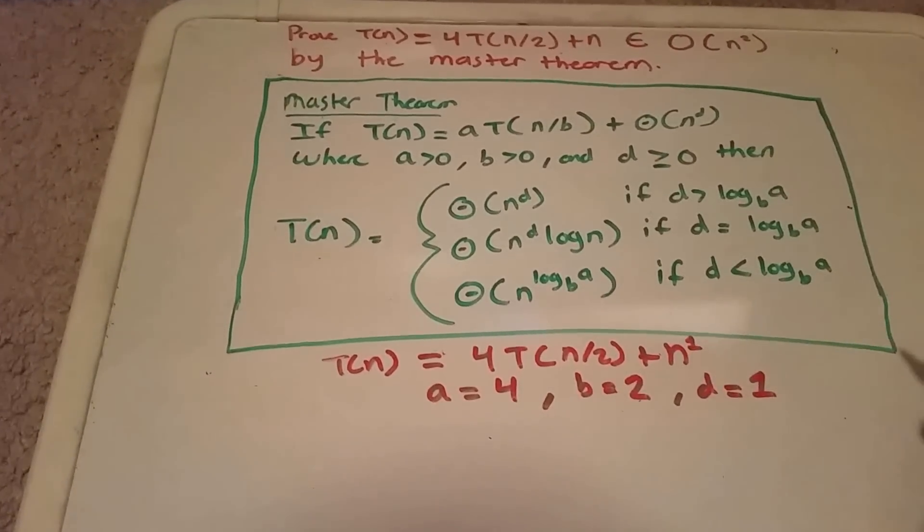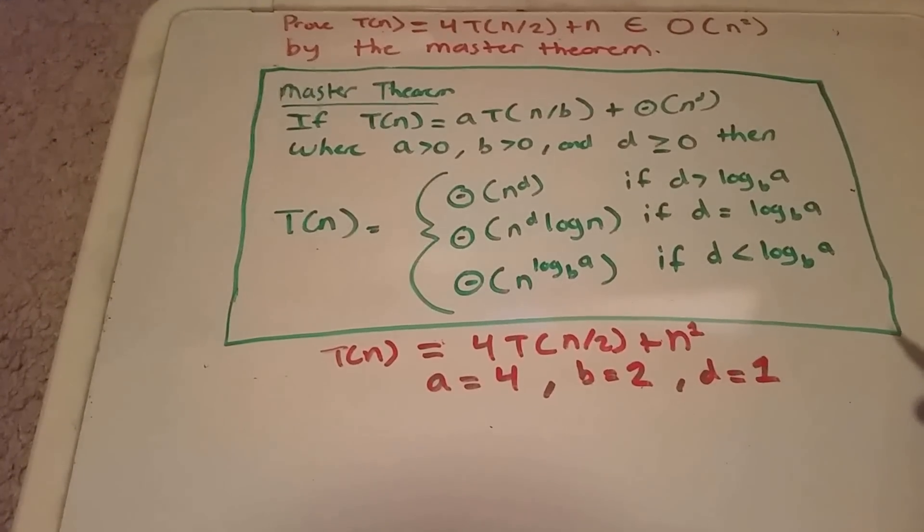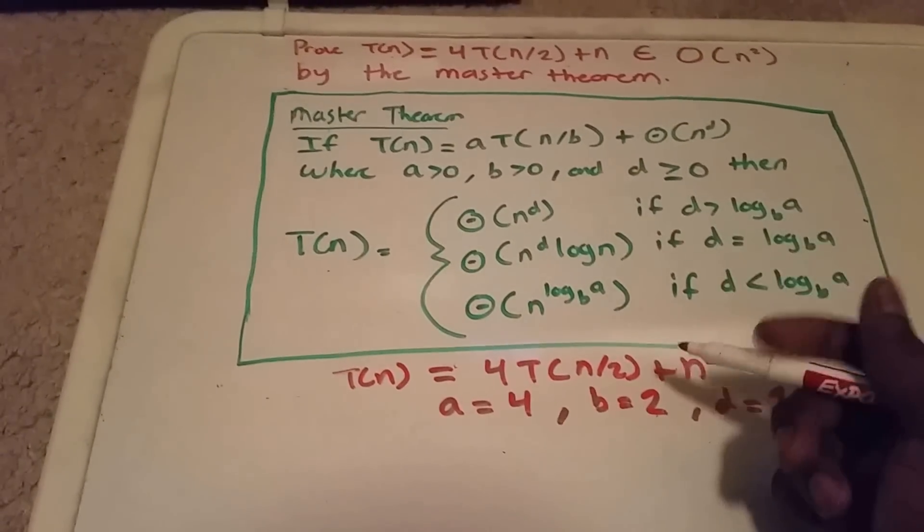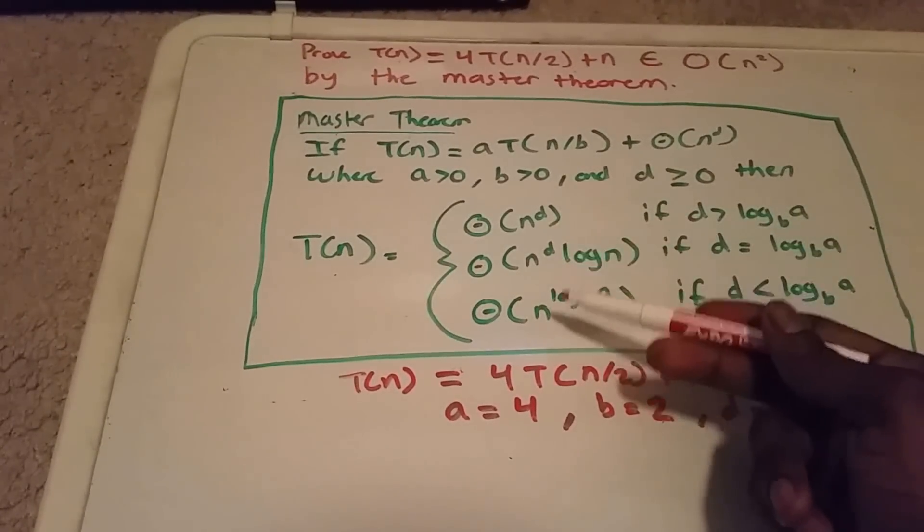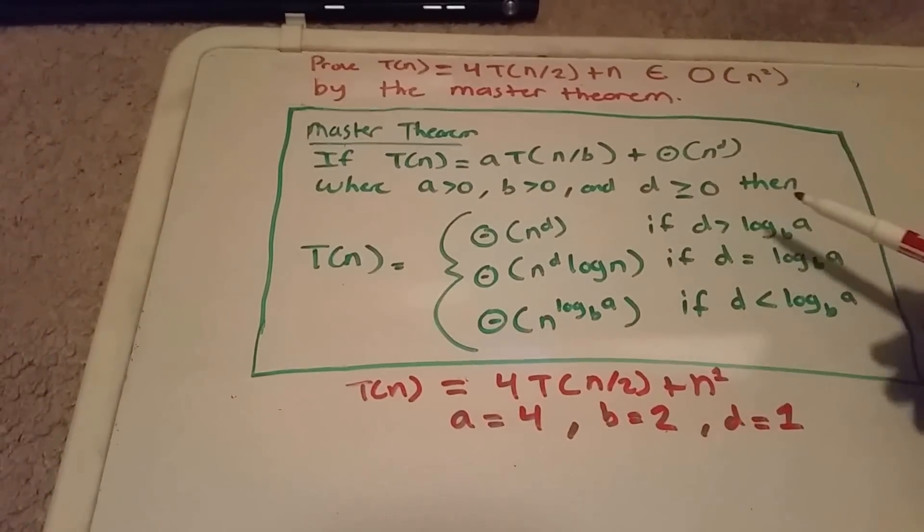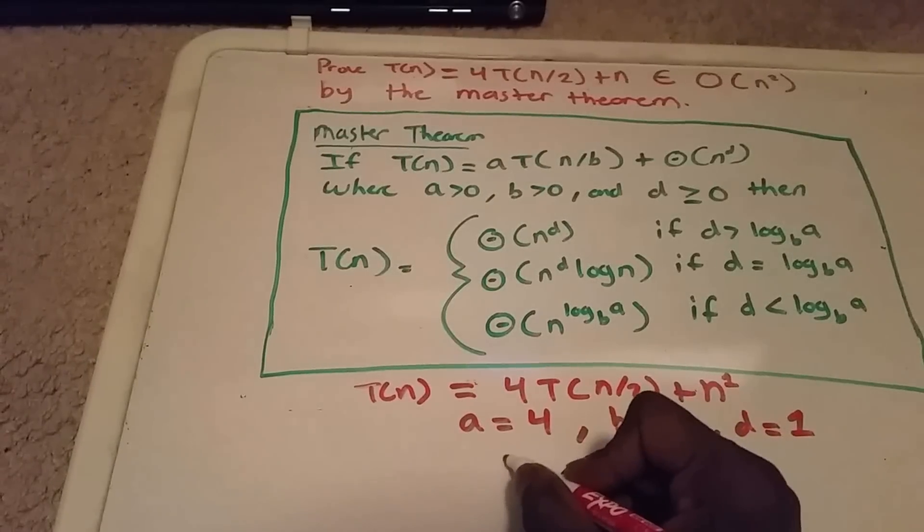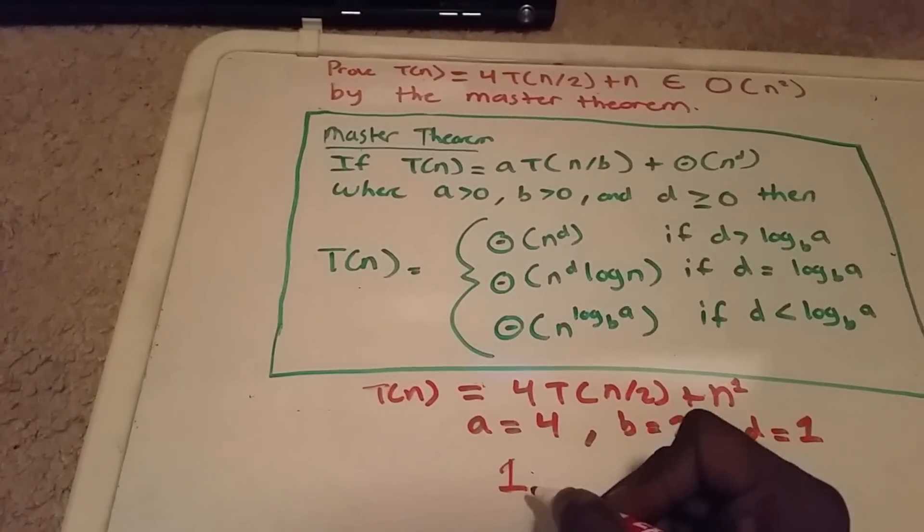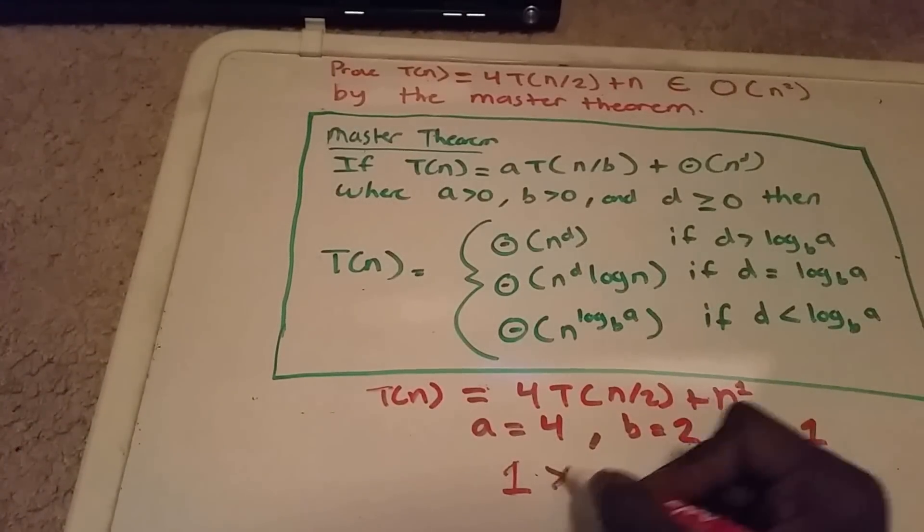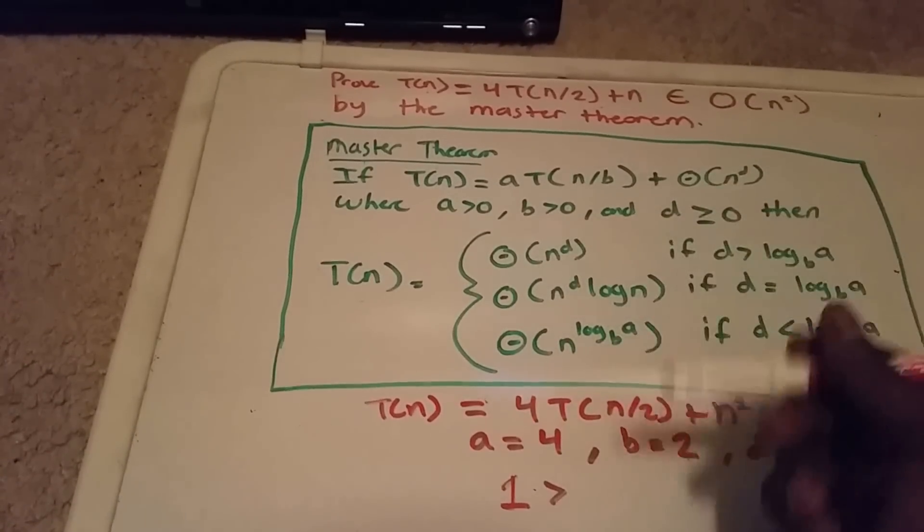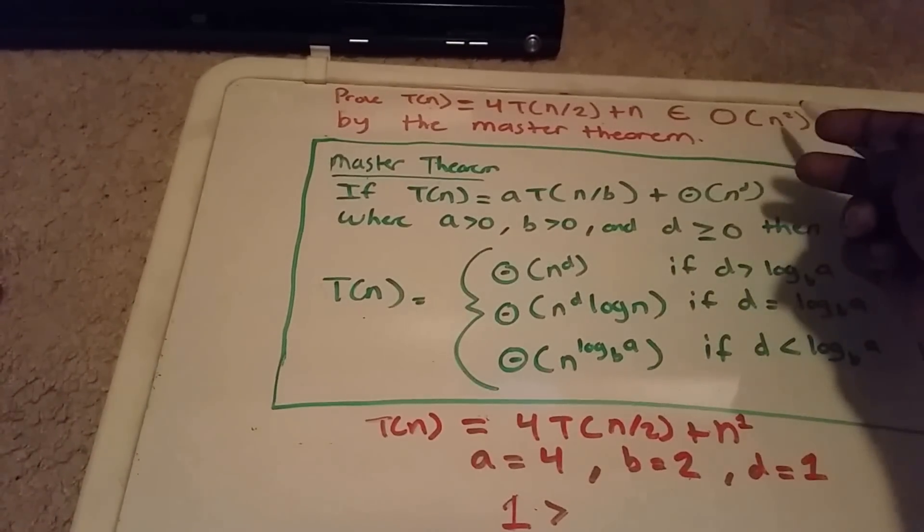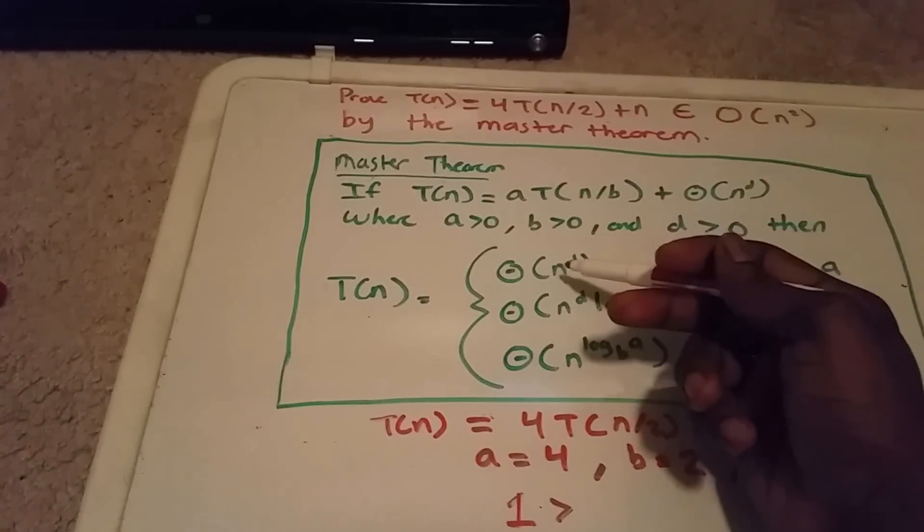Now we need to determine which case T belongs to. Let's check—we want to verify if it's big O of n to the power of two, so this looks like n to the power of something. Let's check that.